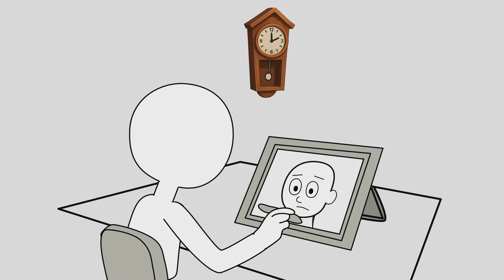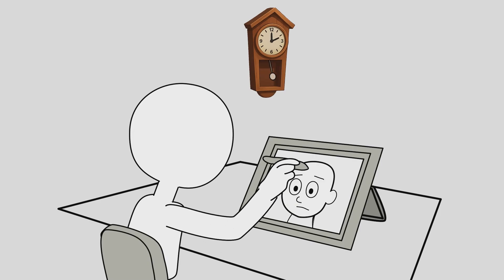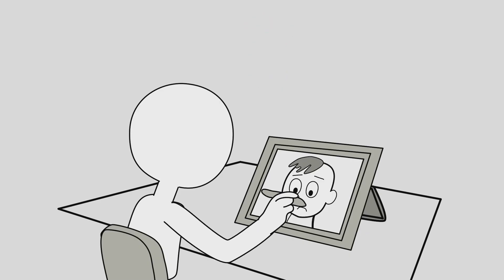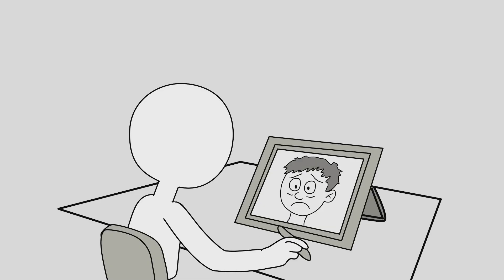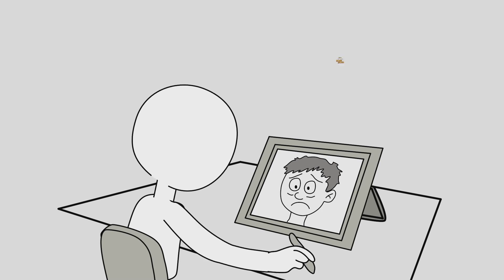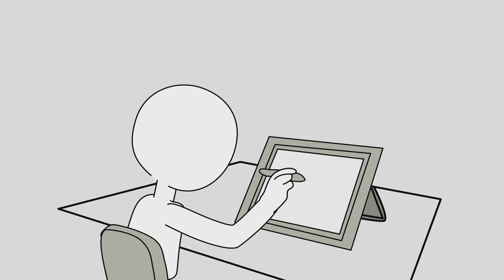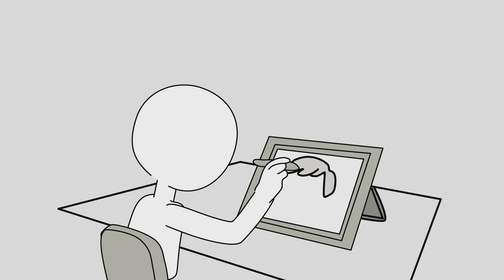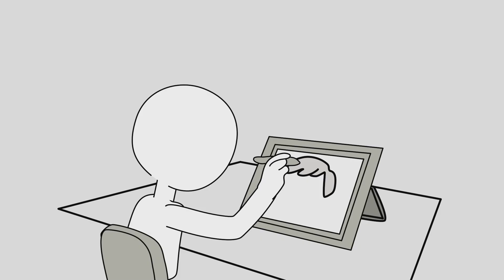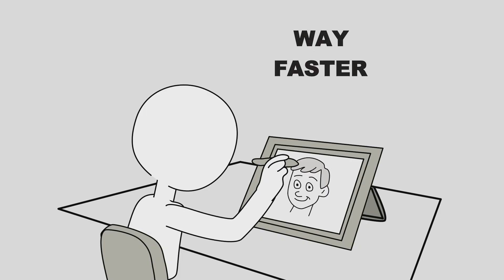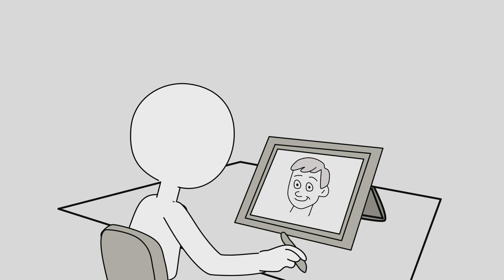The first time I tried drawing hair in Moho, I spent 15 minutes on five strands. Then I zoomed out and it looked like I let a child do it with a crayon. I almost quit, but then I found the blob brush. Just sketch freely — no need to add points one by one or wrestle with the freehand tool. The blob brush turns your strokes into clean, editable shapes, way faster for wild strands, curls or stylized locks.